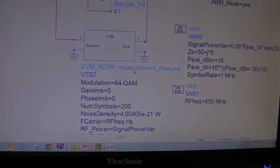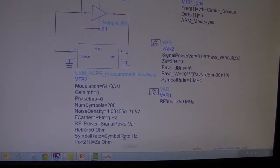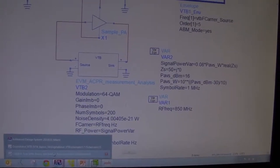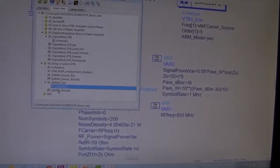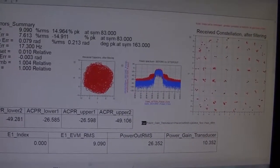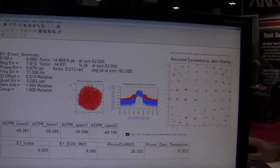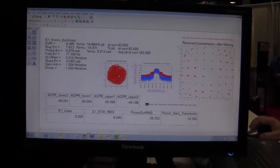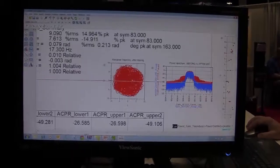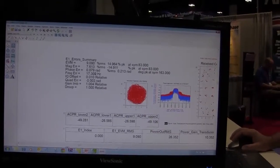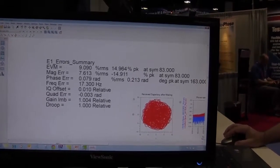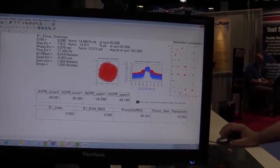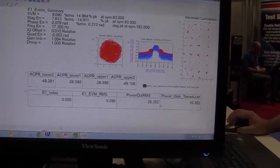This customized template comes from SystemVue. If you simulate this now, you will get something like this—the same kind of data, the constellation, the trajectory diagrams. Notice here you have the EVM and also the ACPR data.